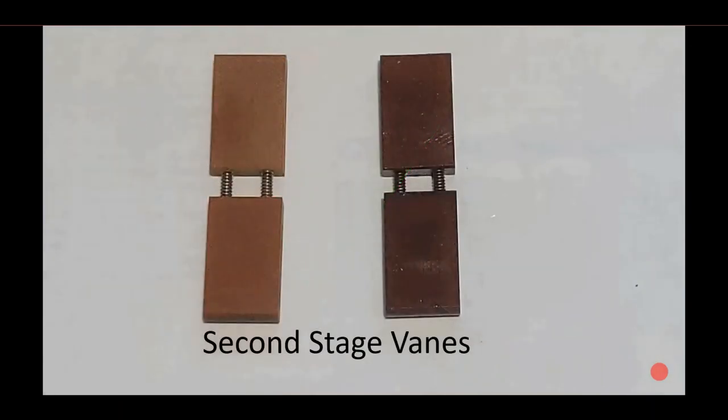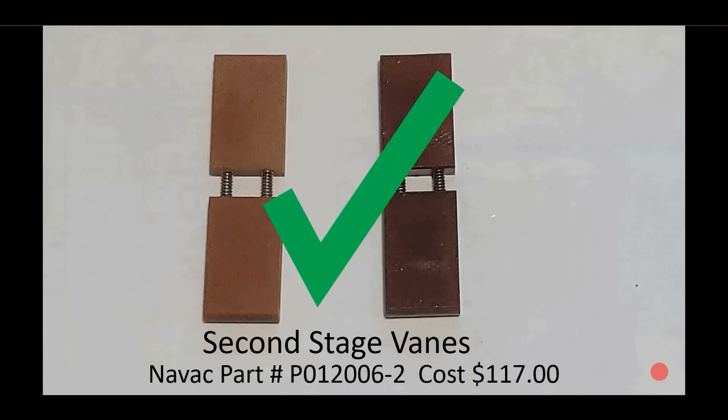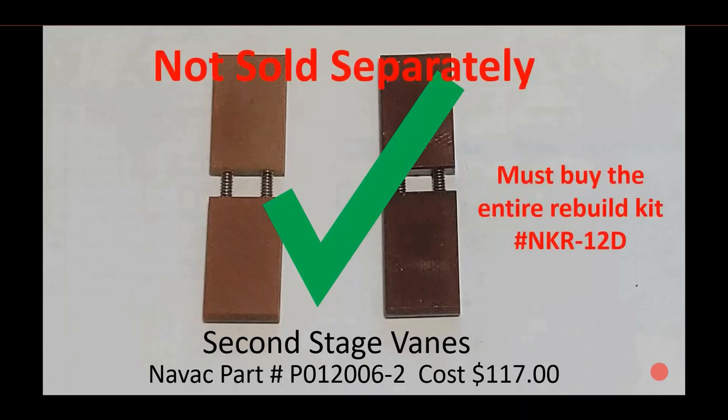The second stage veins are exactly a match. The part number for these is P012006-2. However, the cost is $117. There's also one other problem with this: you have to buy the entire rebuild kit to get the second stage veins. They're not sold separately. So for the price of $117 plus freight and taxes, you can get all the parts that we're going to be reviewing, not just the veins themselves.